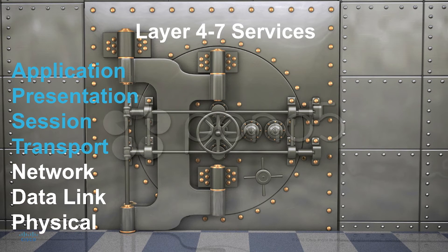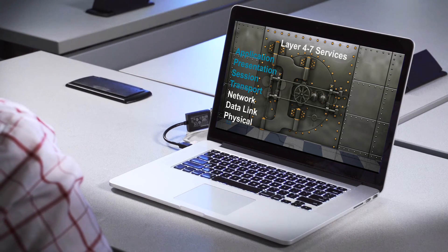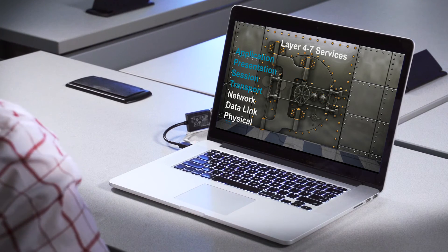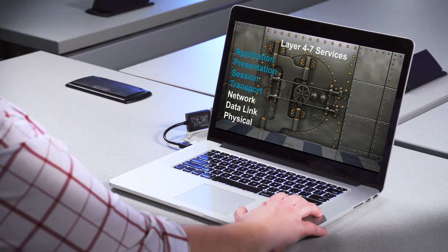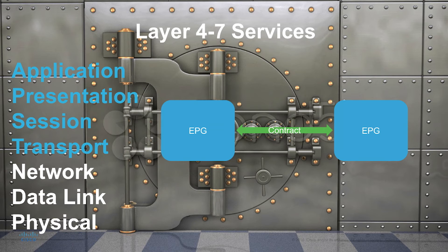I'm only going to cover layer four through seven services from a high level in this video, to get the point across of what they're there to do and how they integrate into an application profile. There are several different kinds of layer four through seven appliances, not all of them having to do with security — firewalls, intrusion prevention and detection systems are fairly common, and load balancers would also be included. These services are created as service graphs within a contract. For example, if we want to add a firewall between two EPGs for deep packet inspection, we add that in as a service graph in the contract between those EPGs.